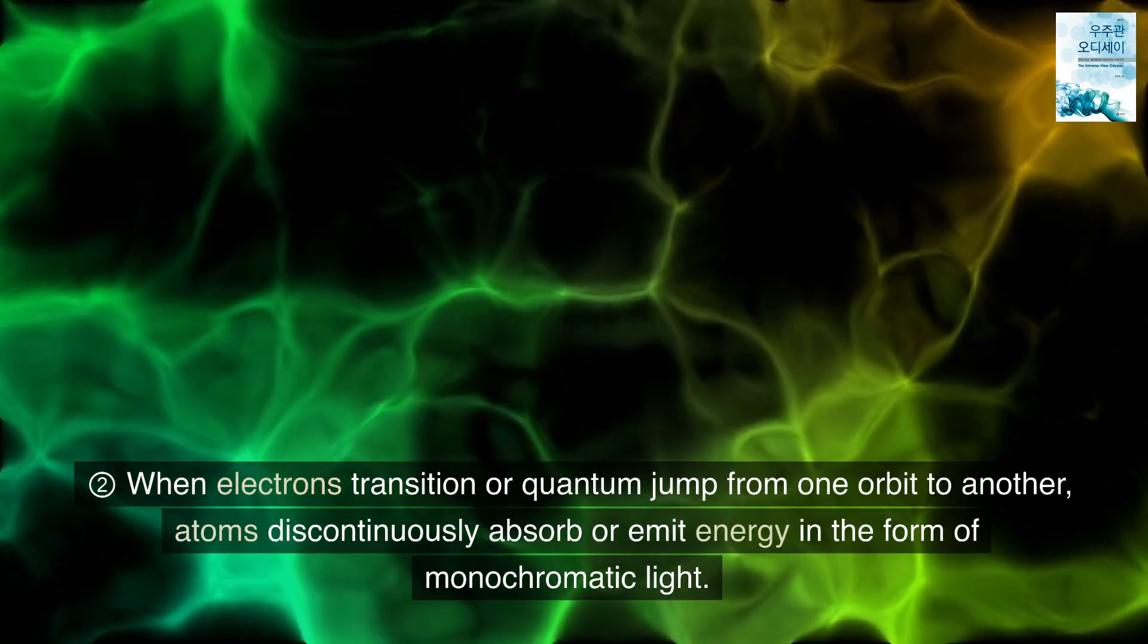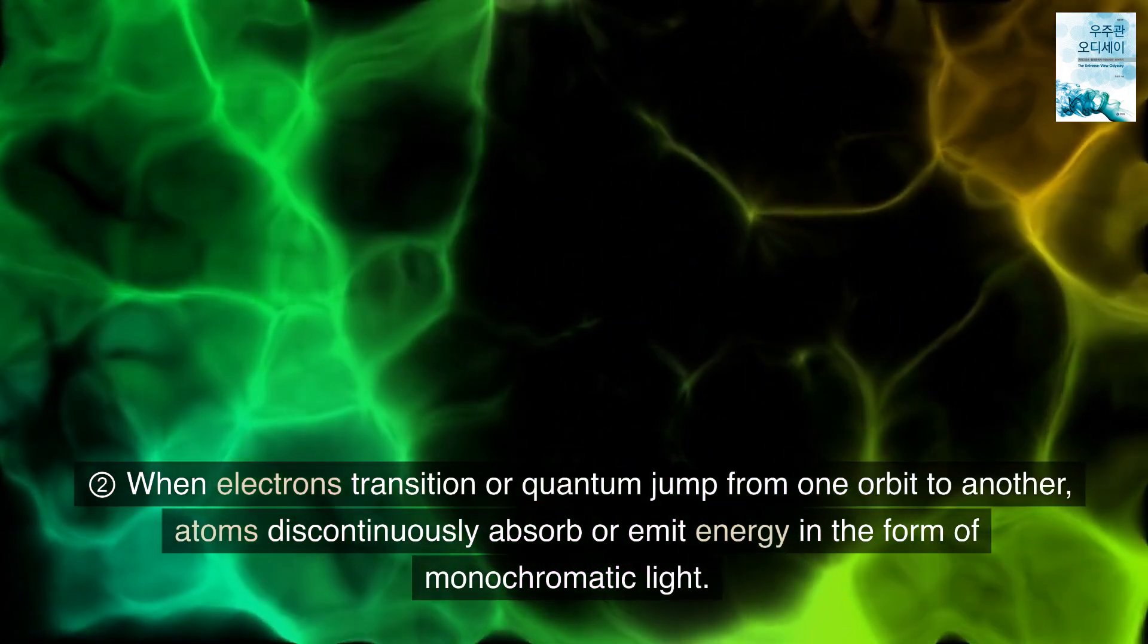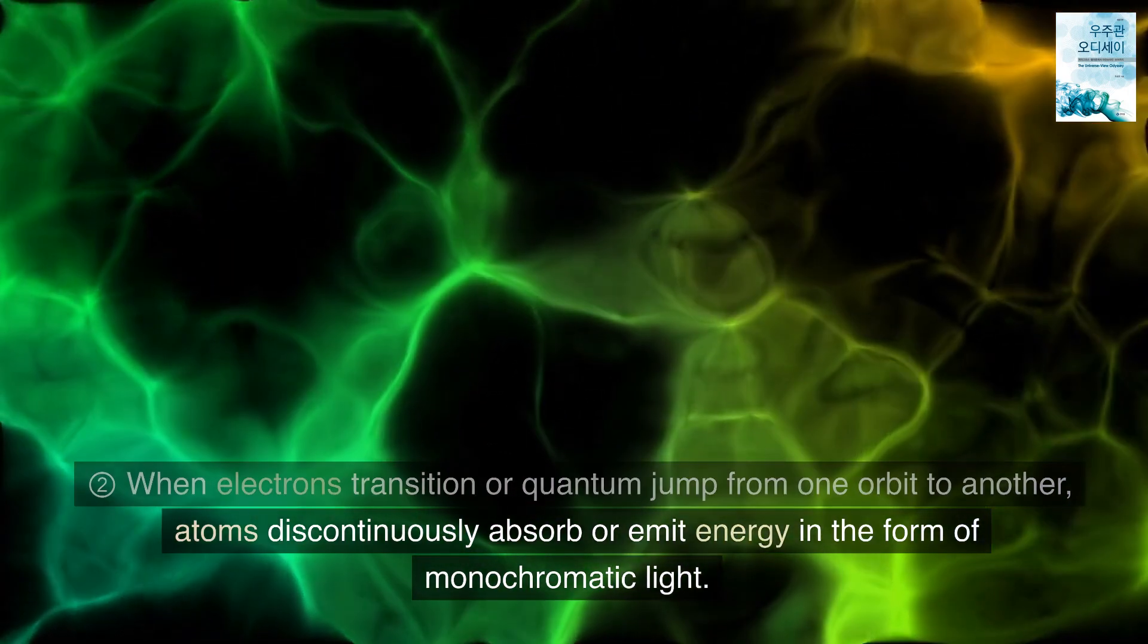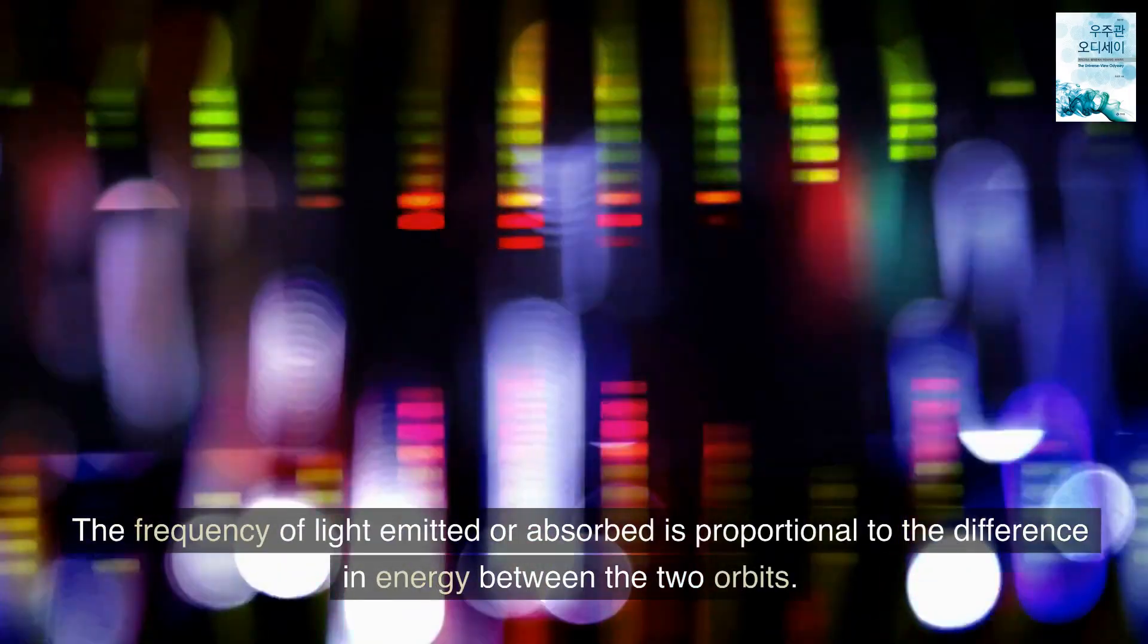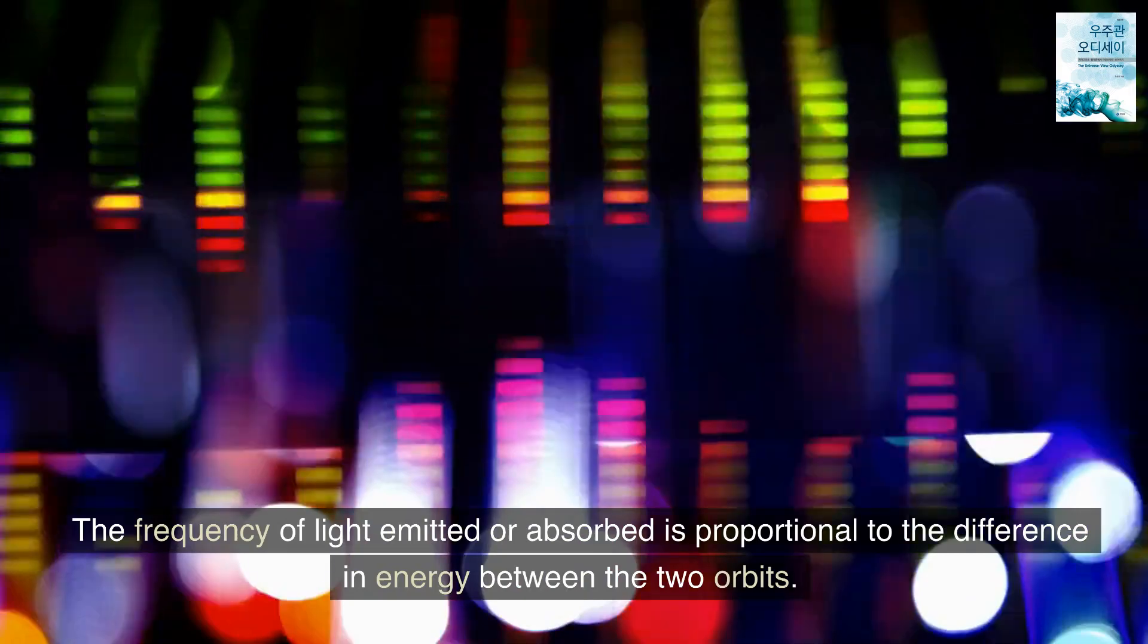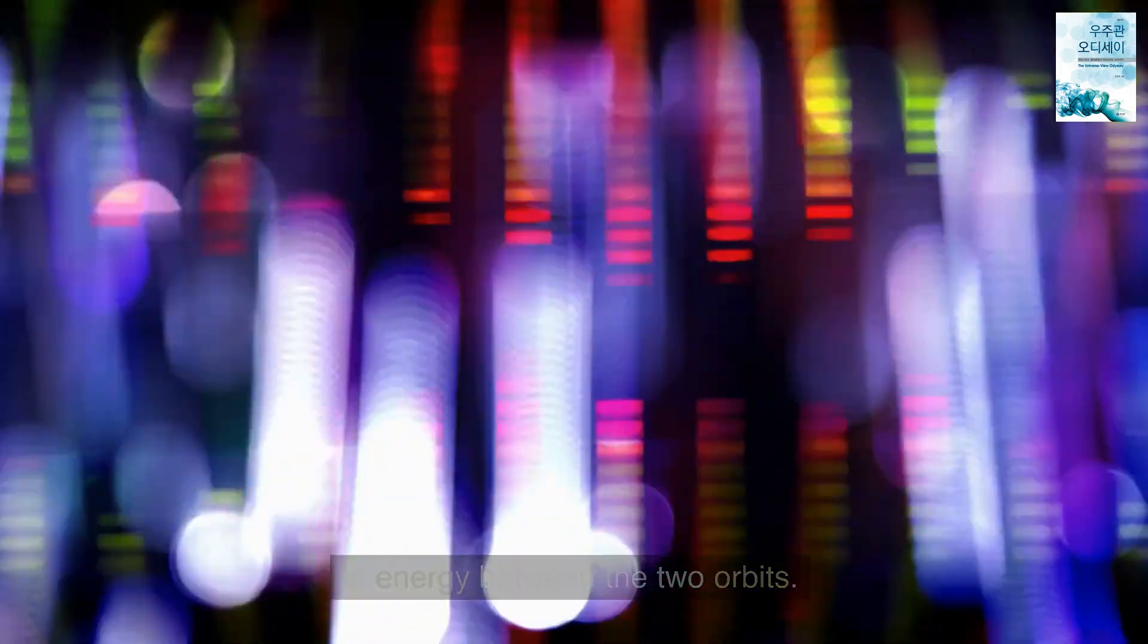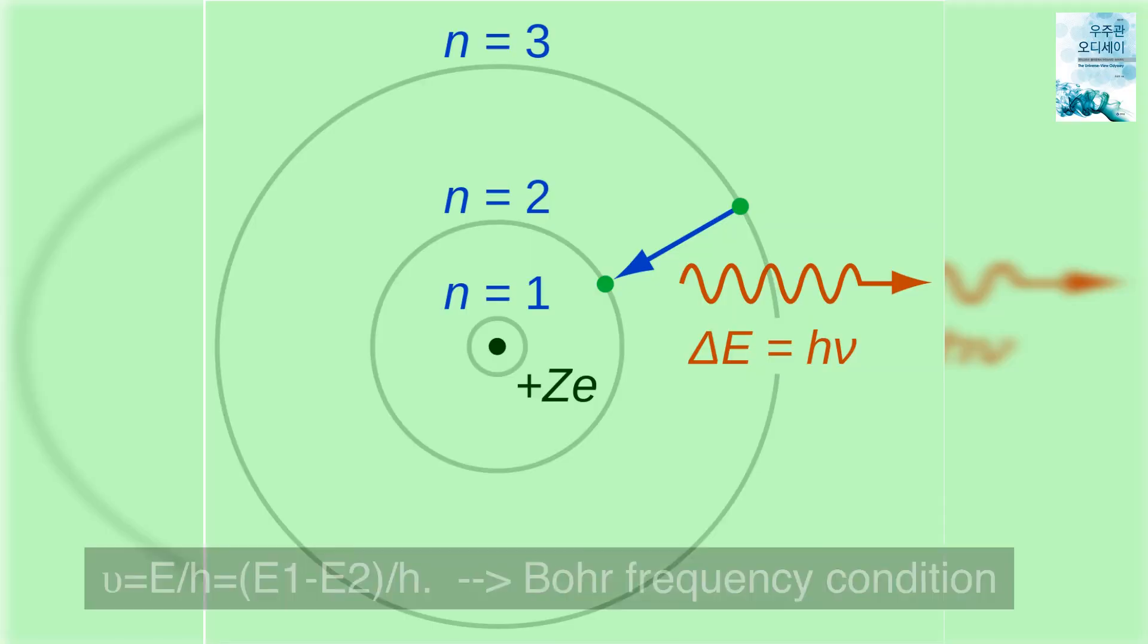Two: When electrons transition or quantum jump from one orbit to another, atoms discontinuously absorb or emit energy in the form of monochromatic light. The frequency of light emitted or absorbed is proportional to the difference in energy between the two orbits. ε = E, H = E1, E2, H.